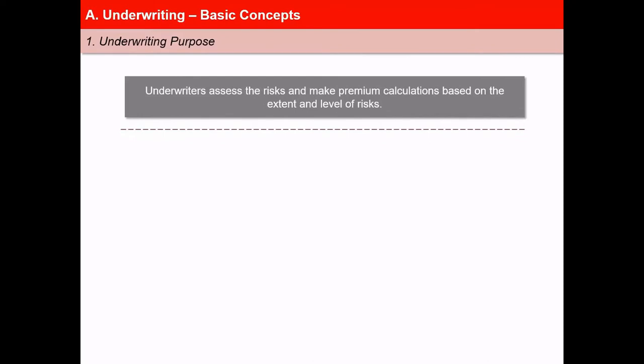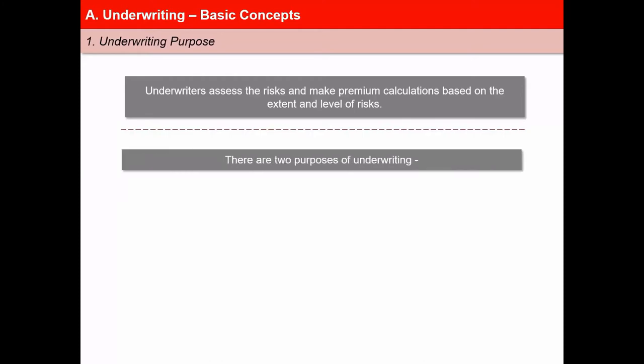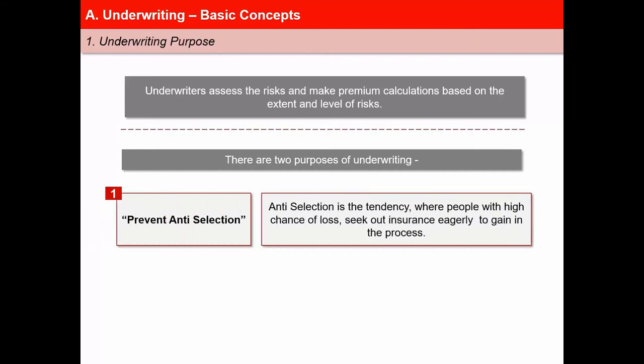Underwriters assess the risks and make premium calculations based on the extent and level of risks. The purpose of underwriting is two-fold. First is to prevent anti-selection or selection against the insurer. The term selection of risks refers to the process of evaluating each proposal for life insurance in terms of the degree of risk it represents and then deciding on granting the insurance and its terms. Anti-selection is the tendency of people to seek out insurance eagerly to gain in the process because they suspect that their chance of experiencing a loss is high.